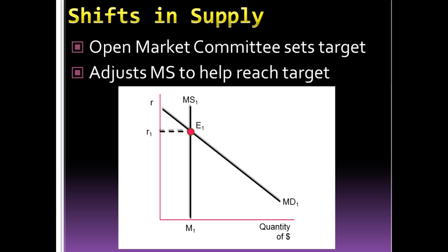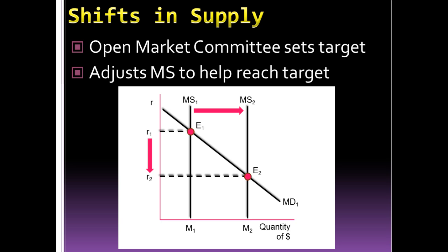When it comes to shifts in supply, the money supply is set by the Federal Reserve through the Open Market Committee. They set a target interest rate and then adjust money supply to meet it. For example, if the Federal Reserve wanted to see the interest rate drop from R1 to R2, they would increase the money supply so that the new equilibrium in the money market is at that target interest rate. We'll talk more about these decisions when we discuss monetary policy.